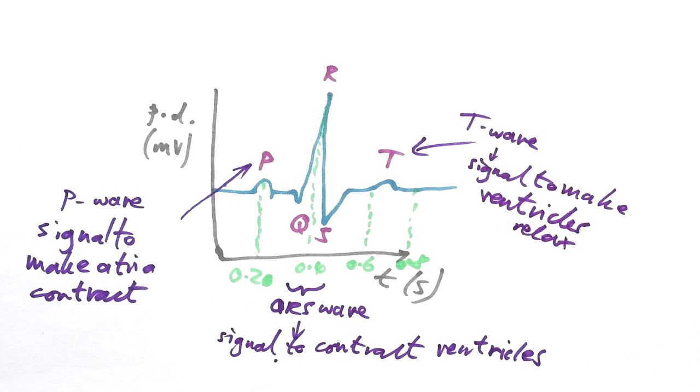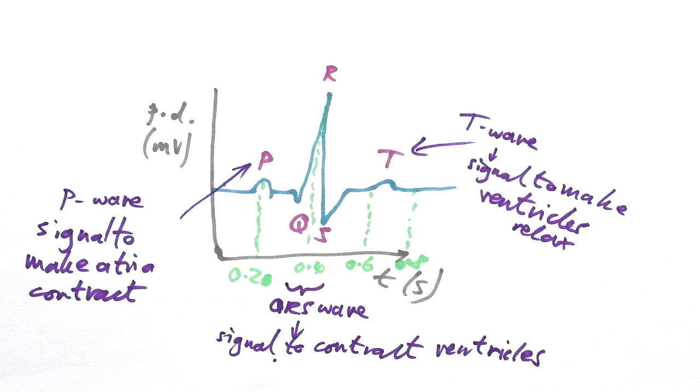So if you have an electrocardiogram like this, you can see if the heart is working fairly healthily, and this heart seems like it is. Now the most common thing that you'll see that might be wrong with your heart and this ECG is with the QRS wave.